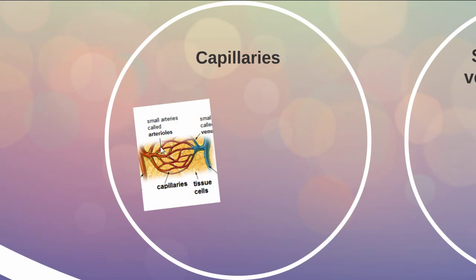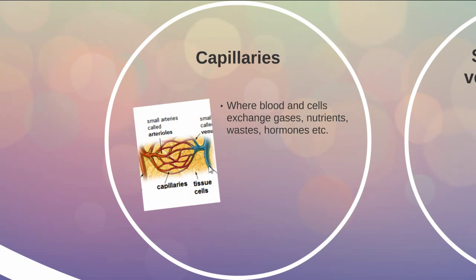The blood in the capillaries drops off its oxygen, then pools back into venules and then into veins as deoxygenated blood. The capillaries are where gas exchange happens between the circulatory system and individual tissues — it's also where nutrients, wastes, and hormones are exchanged. Capillaries are very thin and very numerous, which allows a lot of surface area for diffusion, enabling the movement of lots of materials back and forth.